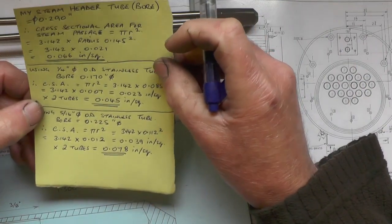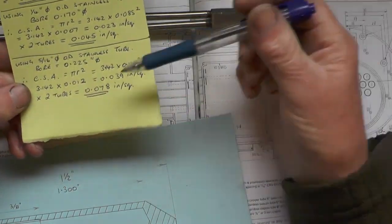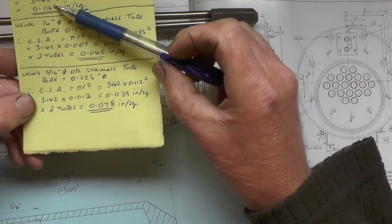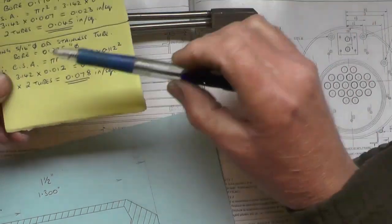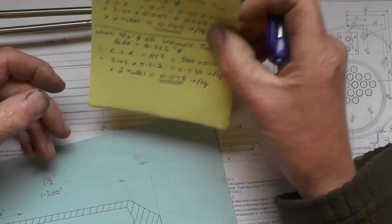Just to be on the side of caution, I worked it out for 5/16 tubing and that came to 0.078 inches squared, which is just above my steam header tube. So that is more than adequate for the steam that's coming from the boiler. There'll be no bottleneck of steam.